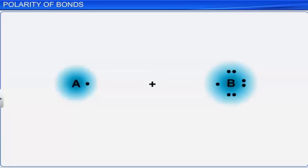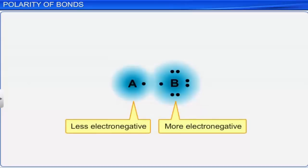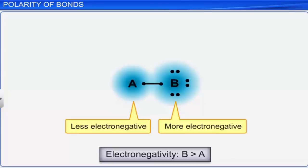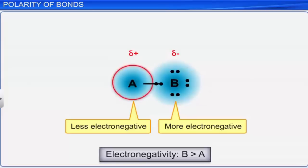When two atoms with different electronegativities combine to form a covalent bond, the electron density between atoms is shared in such a way that it is displaced more towards the more electronegative atom. As a result, the more electronegative atom gets a partial negative charge, while the less electronegative atom gets a partial positive charge.